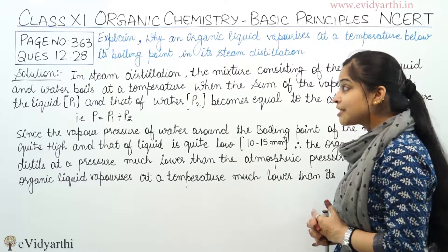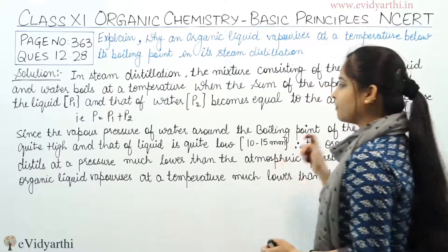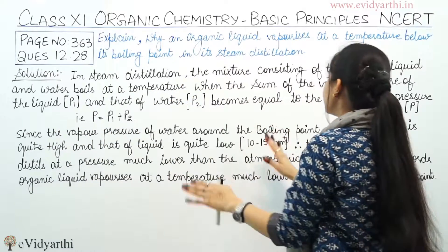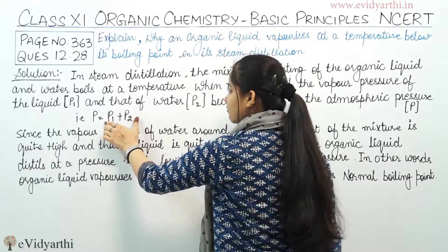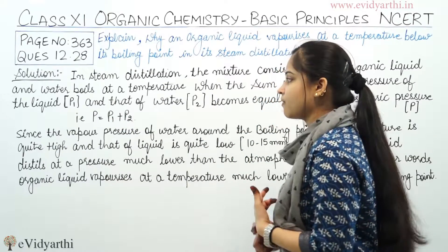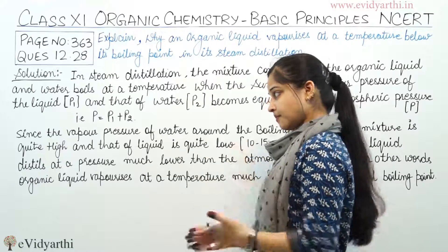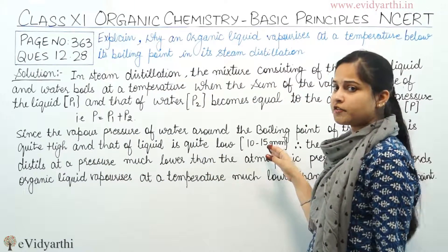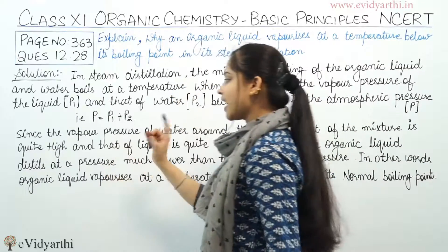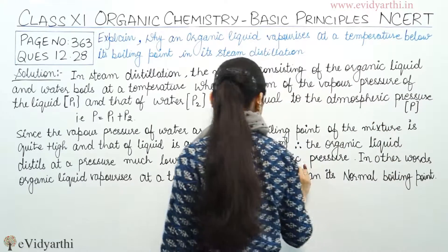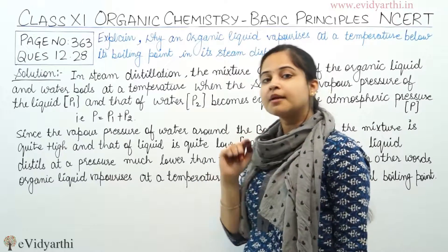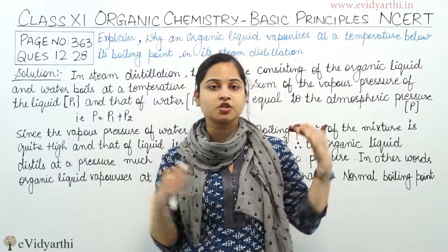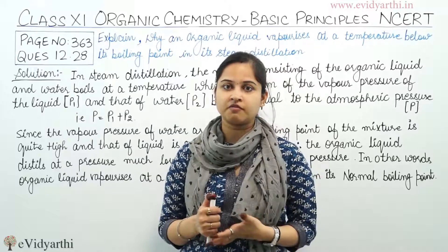In steam distillation, the mixture consisting of the organic liquid and water boils at a temperature when the sum of the vapor pressure of the liquid P1 and that of the water P2 becomes equal to the atmospheric pressure, meaning P1 plus P2 equals atmospheric pressure. The vapor pressure of water around the boiling point of the mixture is quite high, and that of the organic liquid is quite low, approximately 10 to 15 mmHg. Therefore, the organic liquid distills at a pressure which is much lower than the atmospheric pressure. In other words, the organic liquid vaporizes at a temperature below its normal boiling point.